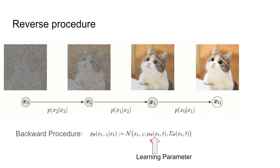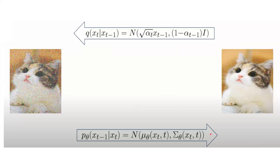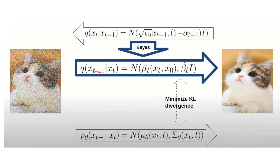These are the learning parameters — please remember that. Here is how we find the loss and train the model. Given the forward and backward procedures, we use Bayes to rewrite the procedures, then minimize the KL divergence — trying to approximate the difference between distributions of those two formulas, finding the best match of the approximate distribution of the data.